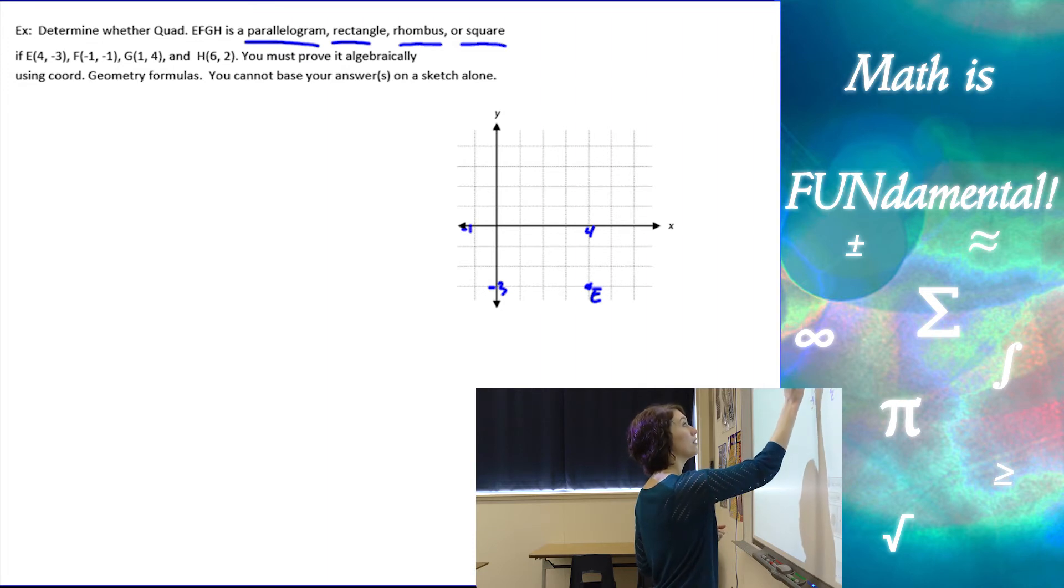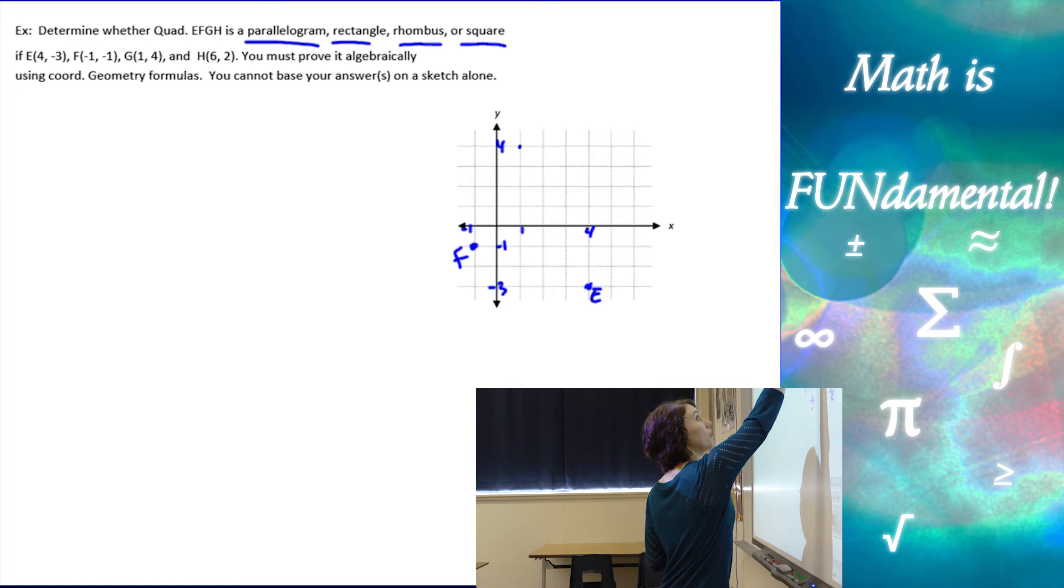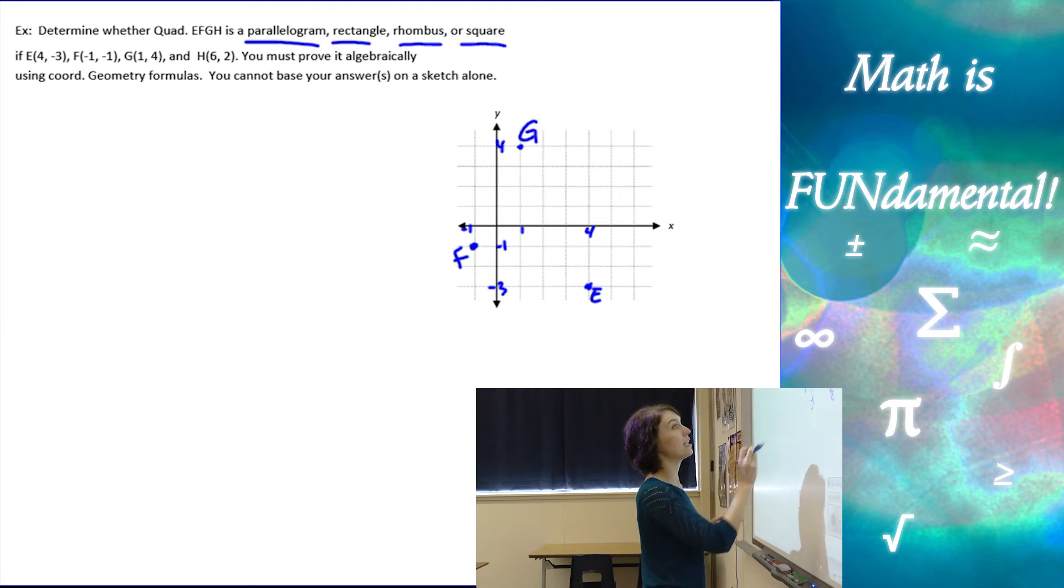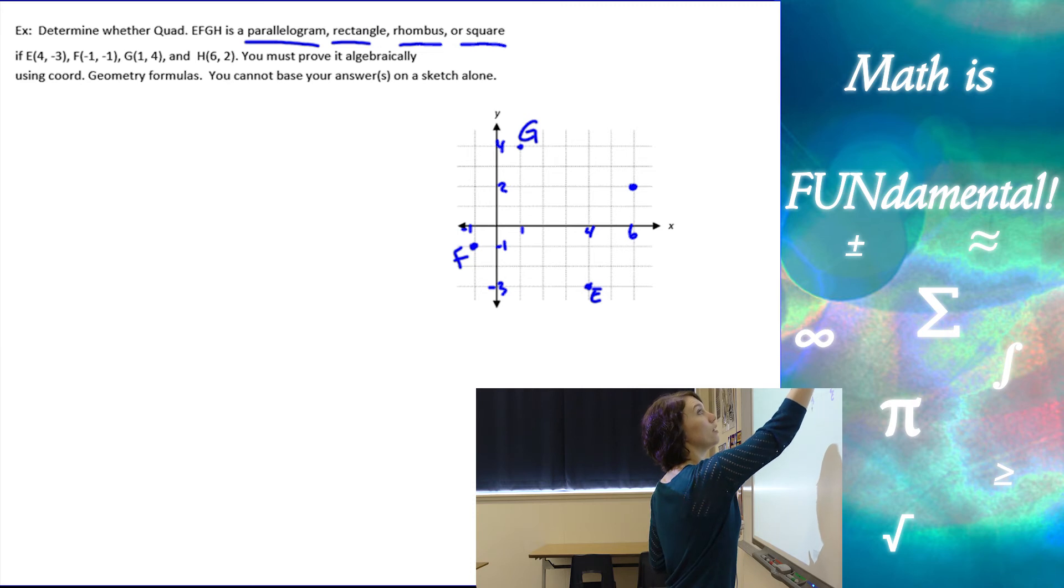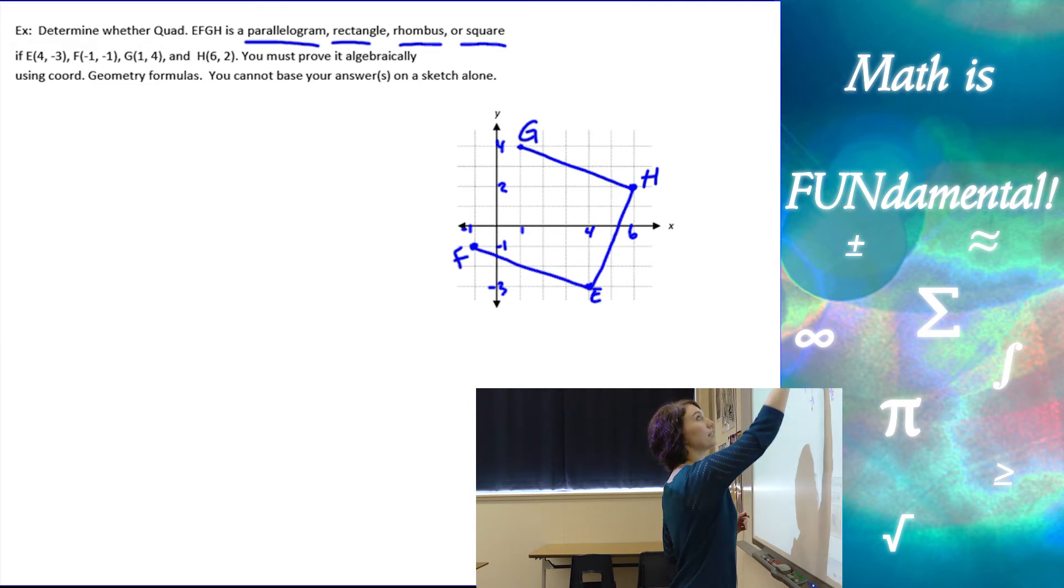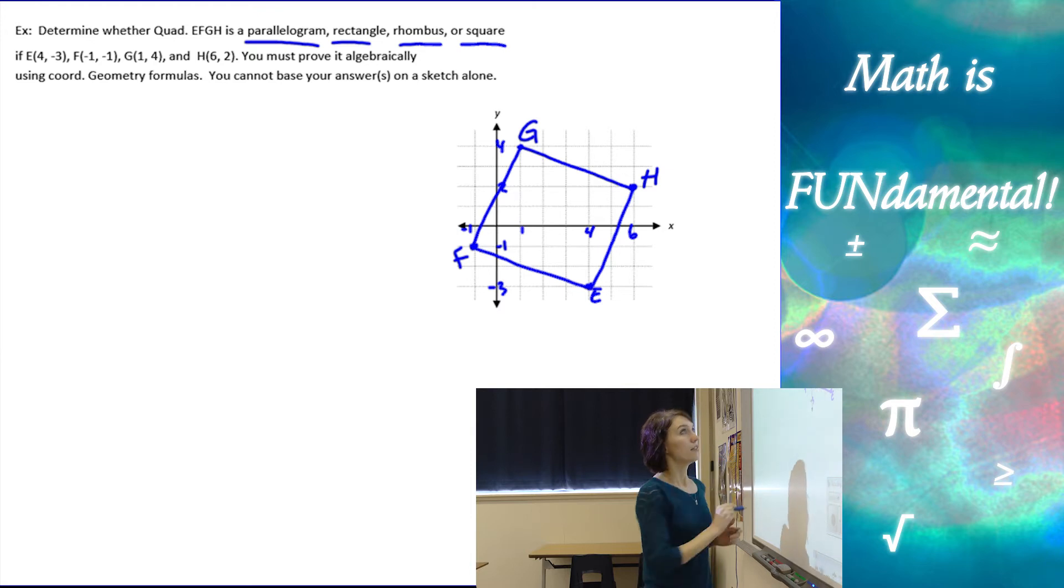And negative 1, negative 1 is f. And g is at positive 1, 1, 2, 3, 4. Oops, not f. That one is g. Alright, and then h is at 6, 2, okay. So we have these two sides here and these two sides here.